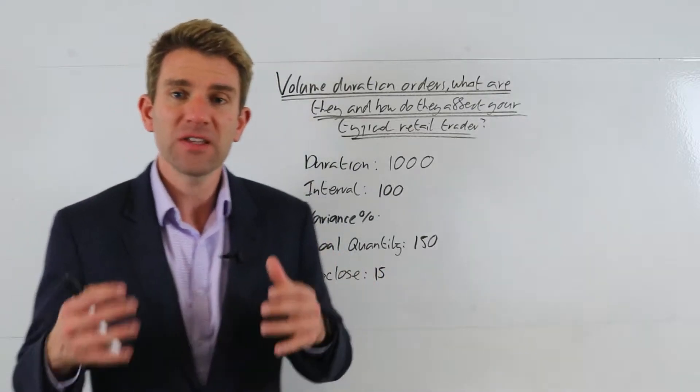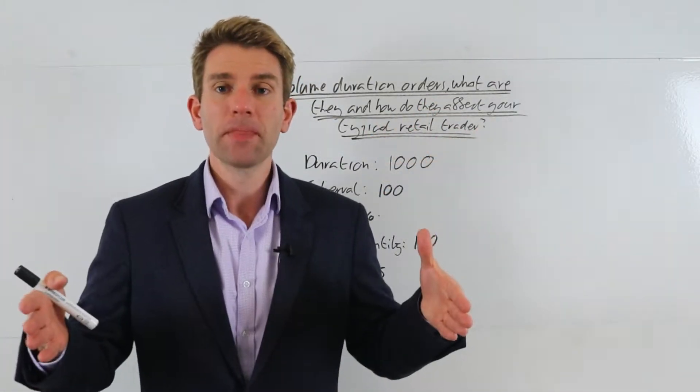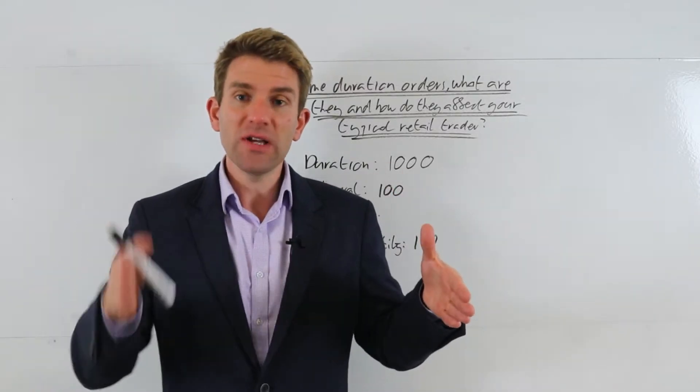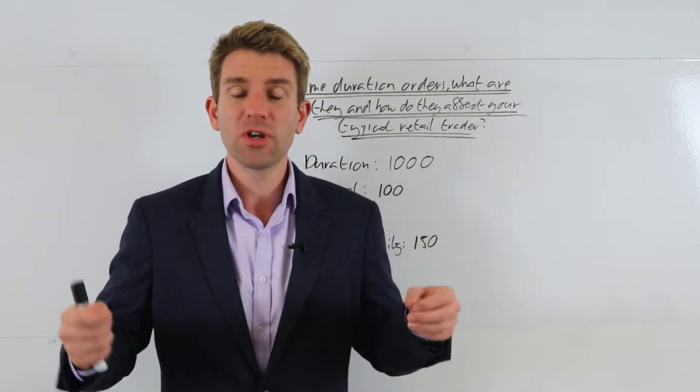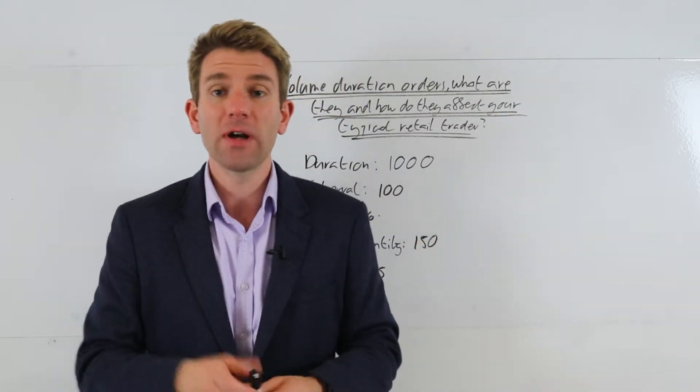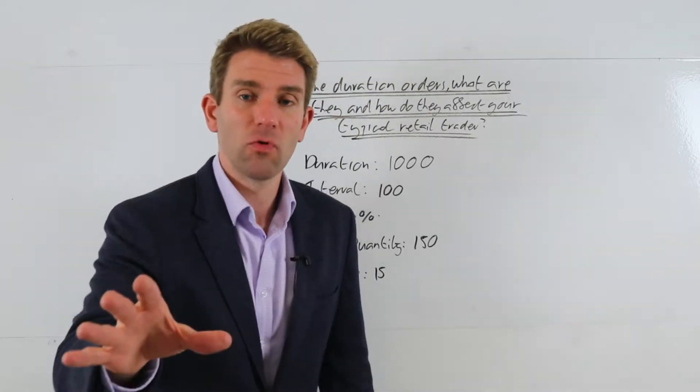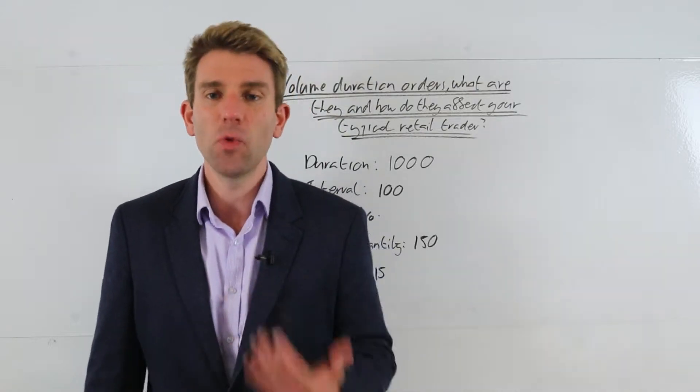But effectively what it's doing is saying: okay, let's take a chunk of volume which we call duration, and over that duration slice up the order that we have into chunks at various intervals so that we're not impacting the price too much. In other words, we don't want to go in and just smack your order straight in because you might impact the price. You don't want to be sitting there trading it, working the order manually, because there's a lot of legwork involved in that.